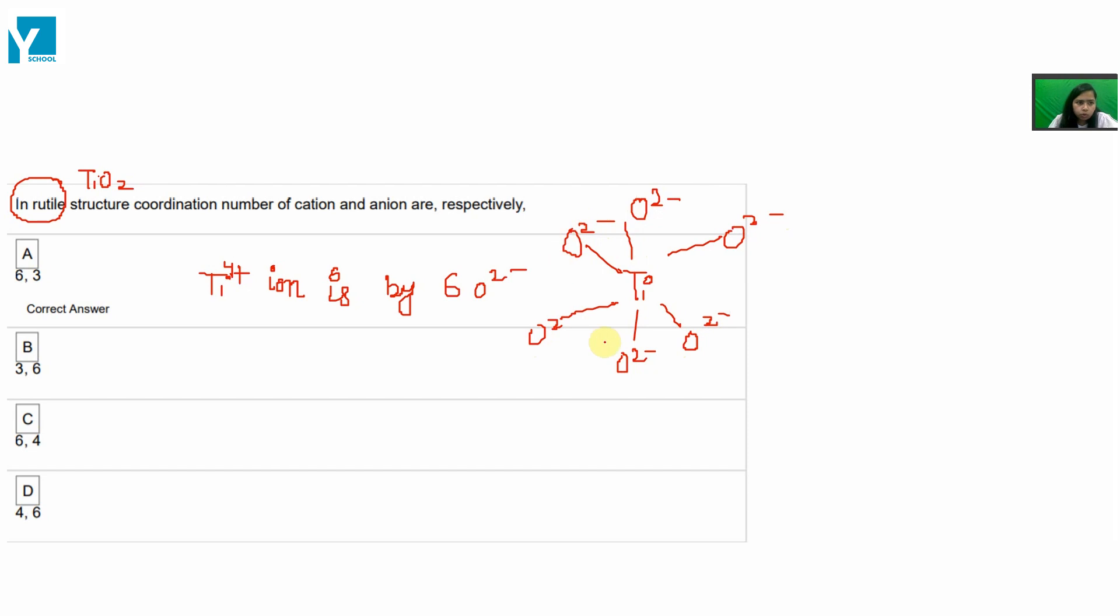When each O2 negative ion is surrounded by only 3 Ti positive ions, and each O2 negative of 3 Ti positive ions arrange at 3 corners of a plane triangle. And this is an arrangement in a triangle in three corners present.